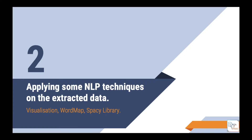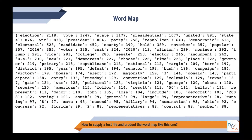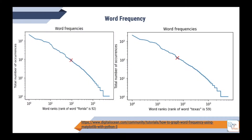Once we extract the text, it is time to apply some NLP techniques. For example, you would be interested in creating a word frequency map, such as the one in these screenshots. We have the name of the words and the number of times each has been repeated in the text, which has a lot of applications in text classification and machine learning.